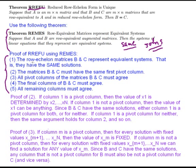The first step says the row echelon matrices B and C represent equivalent systems - that is, they have the same solutions. We're talking about B and C up here. These B and C are row equivalent to A. Since they're row equivalent, they represent equivalent systems. This is true by REMES. As long as we can show that the matrices are row equivalent, they must have the same solution. So that's going to be the basis of our proof - that B and C represent systems that have the same solutions.